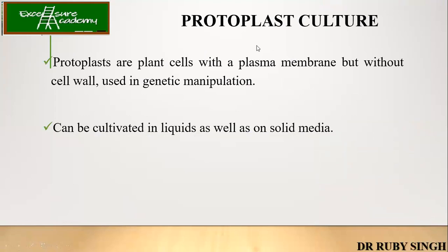So, what are protoplasts? Protoplasts are the plant cells with the plasma membrane but without the cell wall, and they are used in genetic manipulation. Why do we actually remove the cell wall?